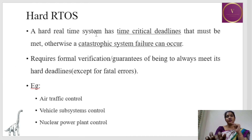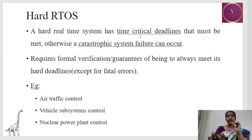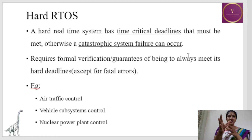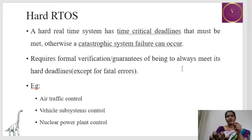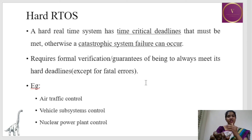Hard real-time systems are used in places like traffic control, vehicle subsystem control, and nuclear power plant control. A hard real-time system has time-critical deadlines that must be met; otherwise catastrophic system failures can occur. If the deadline is not met, there will be severe damage. It requires formal verification or guarantees of always meeting the hard real-time deadline except for fatal errors — an assured guarantee must exist in order to meet the deadline.